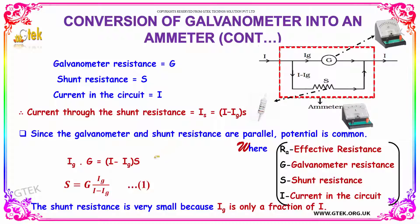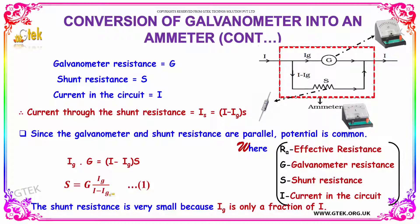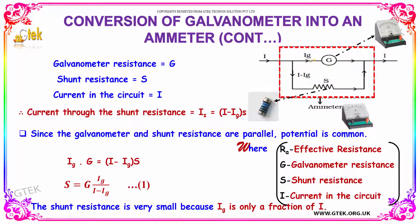So, S is equal to I_G into G divided by I minus I_G. The shunt resistance is very small because I_G is only a fraction of I.